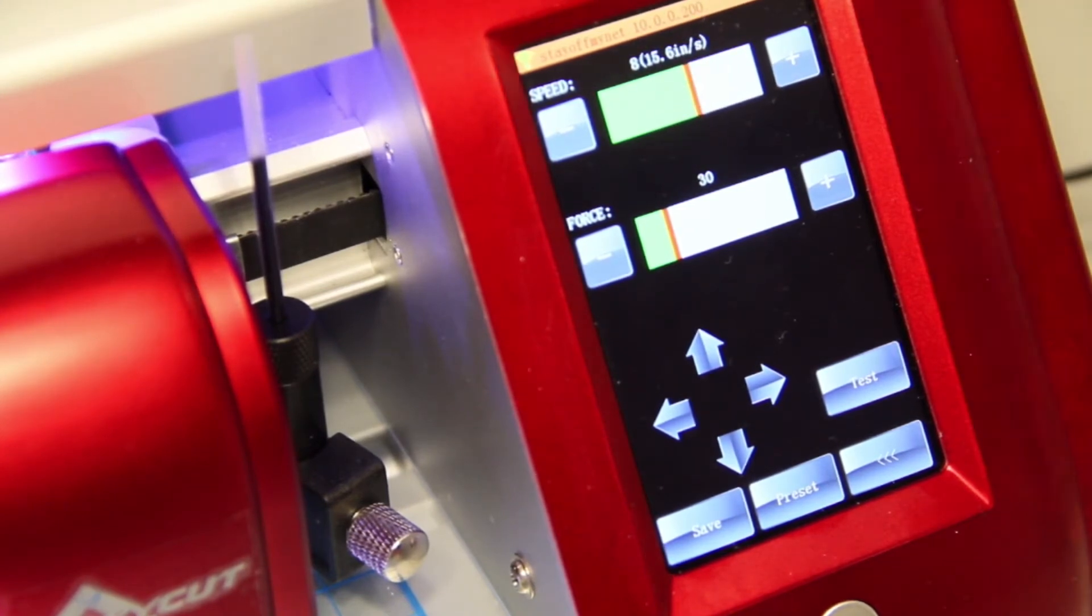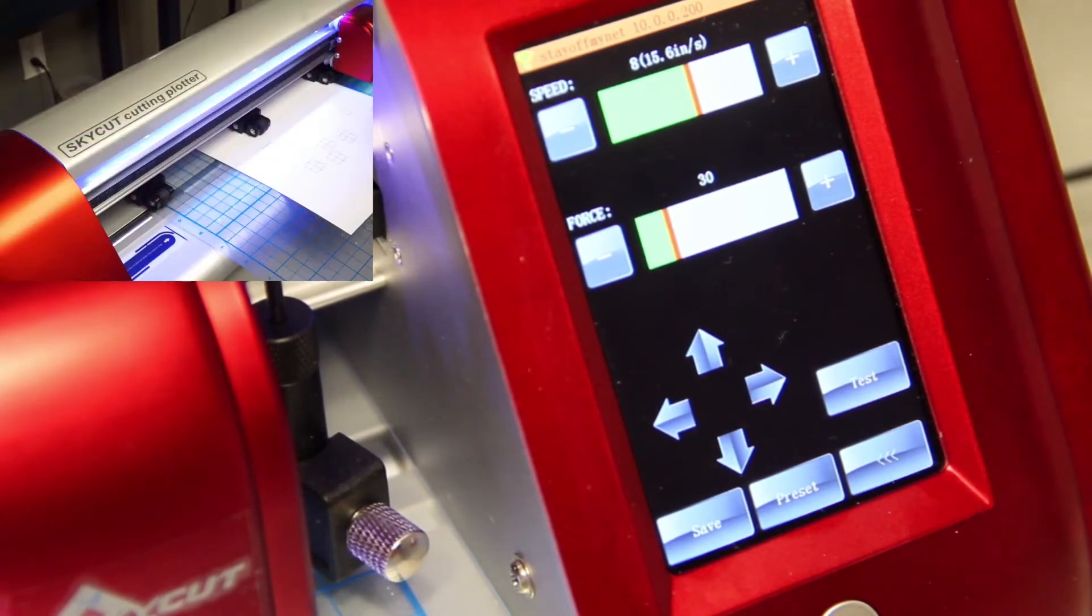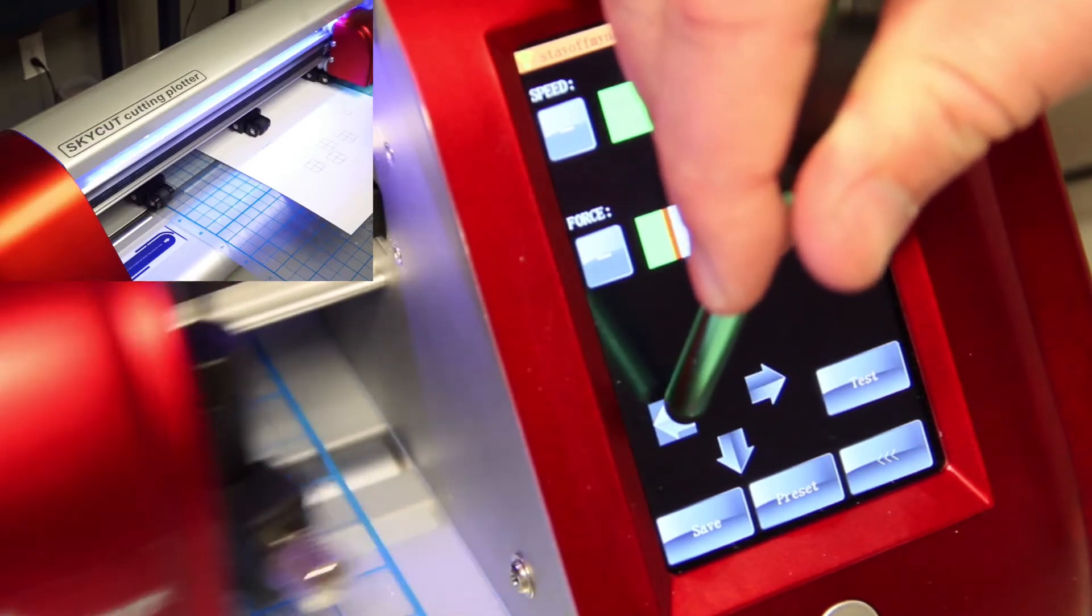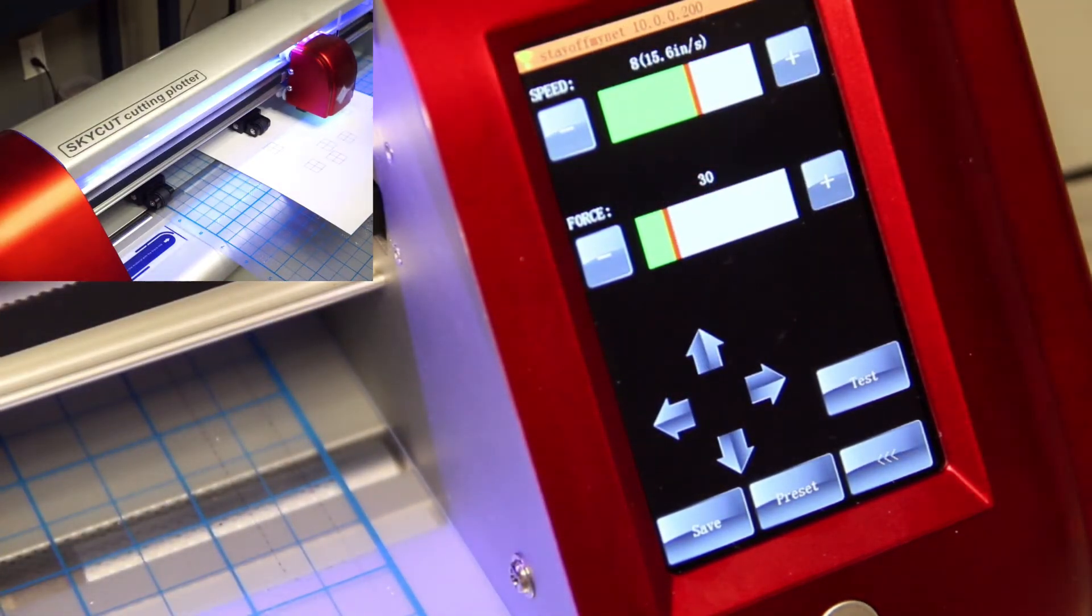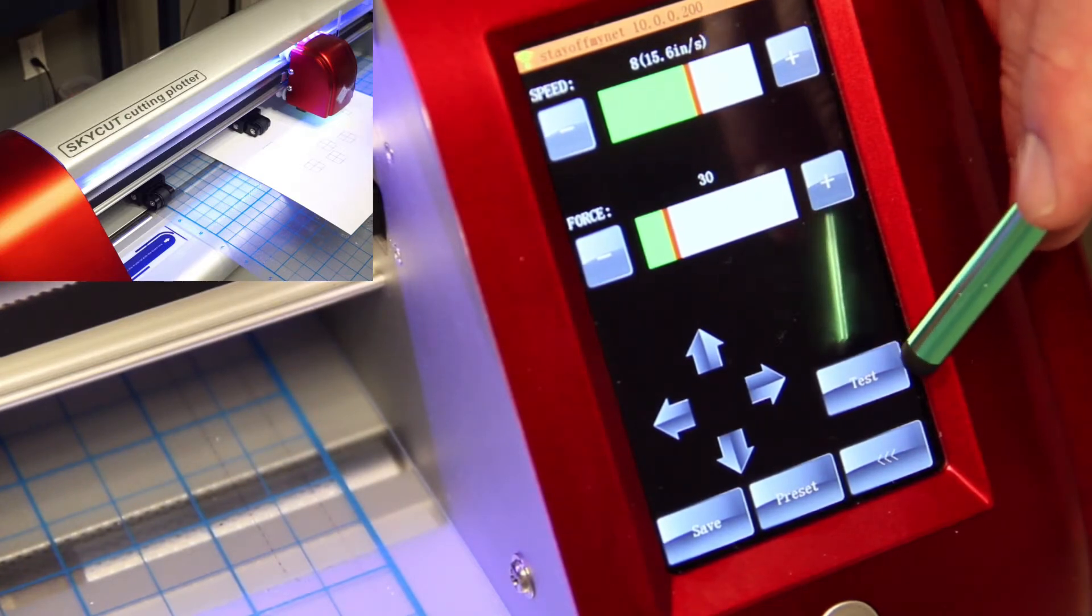And then what we're going to do next is we're going to go ahead and bring this up here. We're going to arrow over to a spot on the piece of paper that is clean, clean enough for us to see a test pen draw real quick. And we do that, we accomplish this by the test button that you see right here.